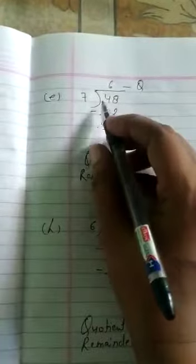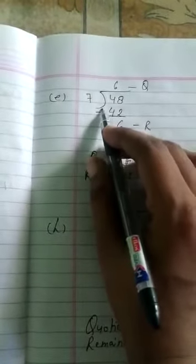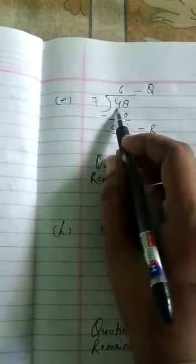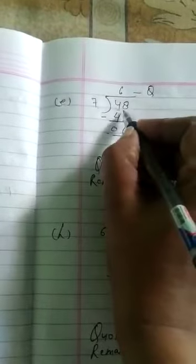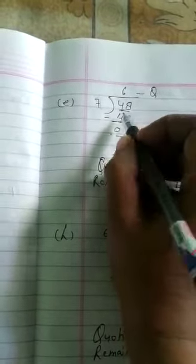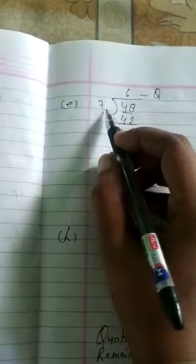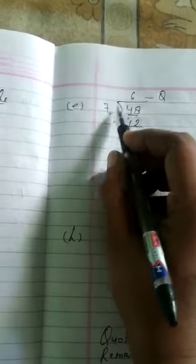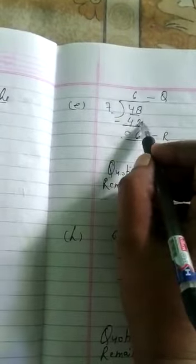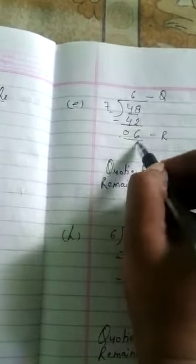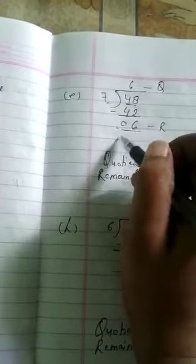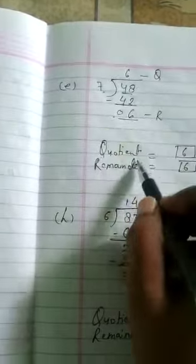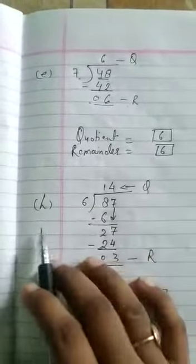Next question E, we have to divide 48 by 7. We have to count the table of 7. 4 is smaller than 7, therefore we have to take 2 digits, 48. 7 sixes are 42. 8 minus 2 is 6, 4 minus 4 is 0. This is your quotient and remainder.